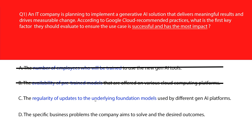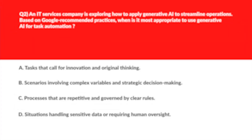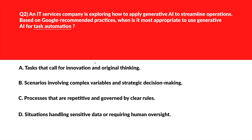Updating regularity and model evolution support performance but doesn't determine which use case delivers the most value — incorrect. Option D says the specific business problems the company aims to solve and the desired outcomes. Defining business problems and desired outcomes aligns gen AI adoption with measurable goals, ensuring the solution delivers business value. We'll lock option D as the right answer.